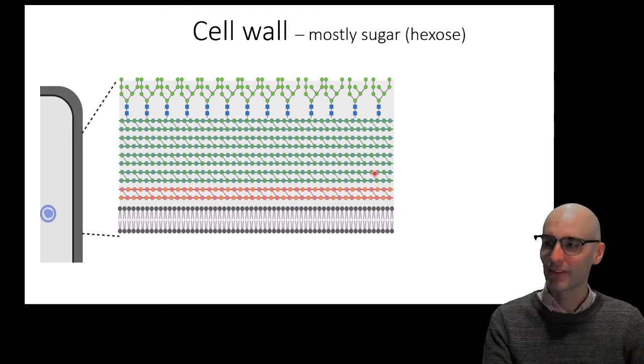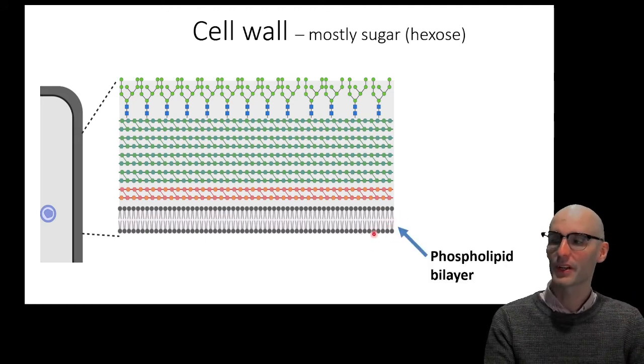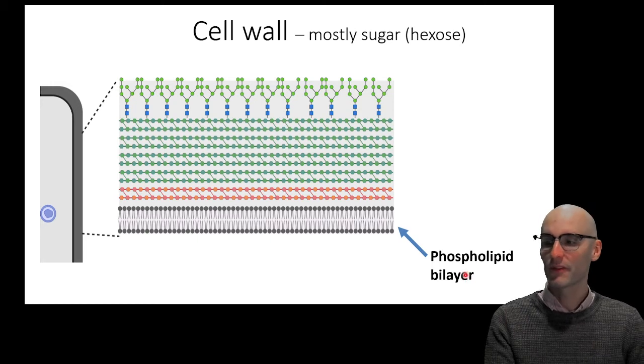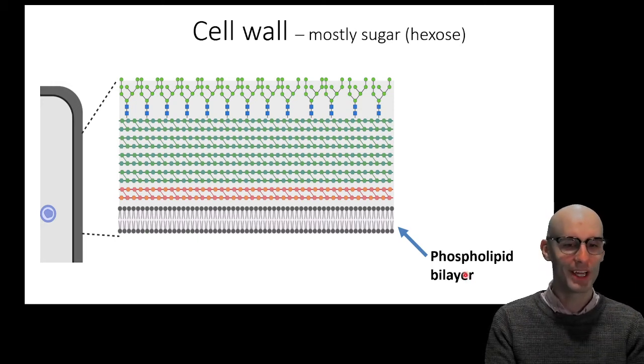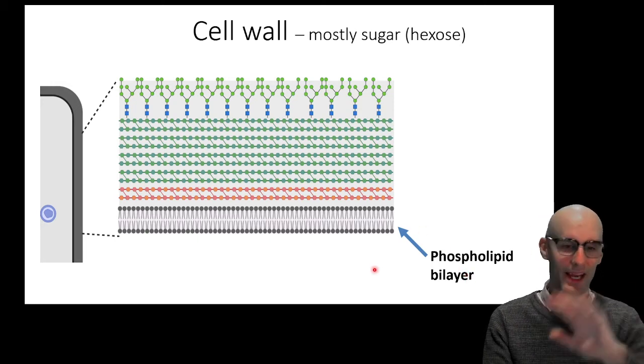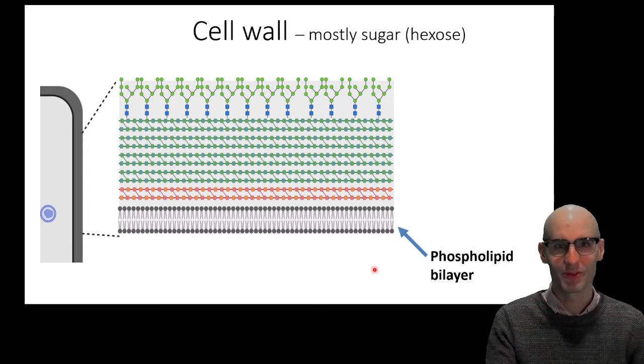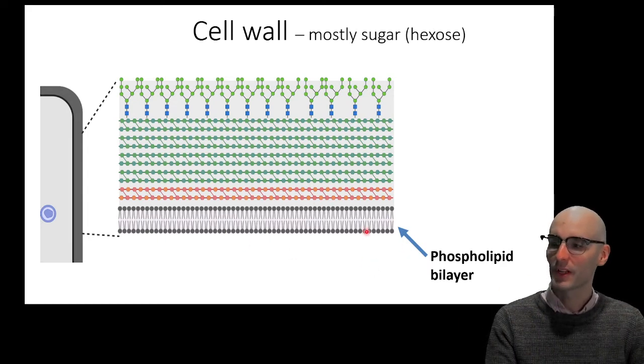But let's zoom in and cover each of these layers so we understand what's going on here. So we have the phospholipid bilayer, like all cells have, you know, made out of those phospholipids, the hydrophobic, hydrophilic interactions to make this phospholipid bilayer.